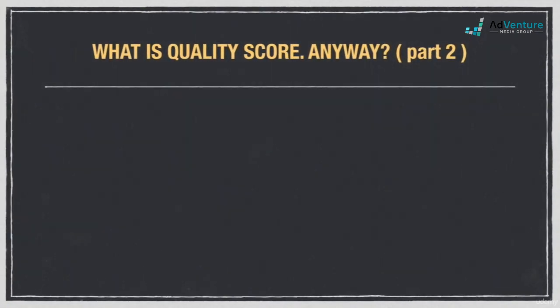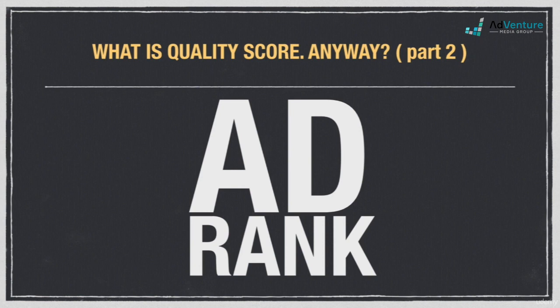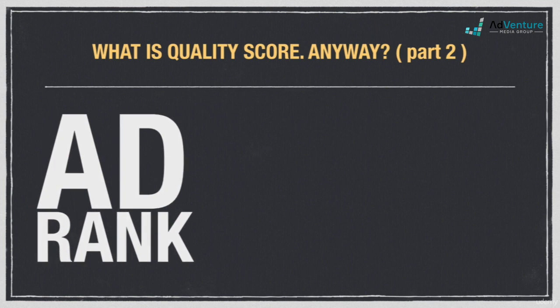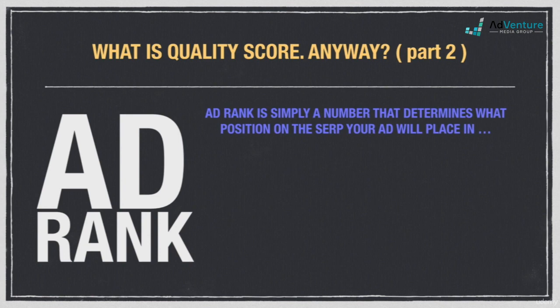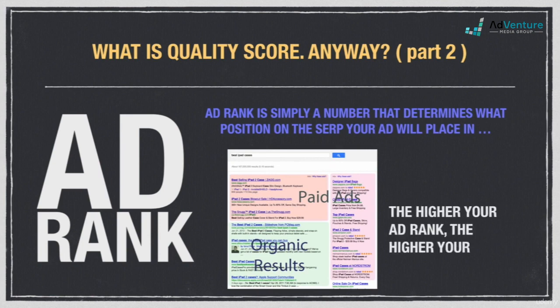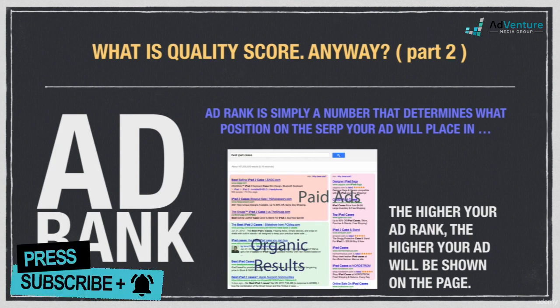One of the first numbers you need to be familiar with is something called AdRank. Your AdRank is just a number that determines what ad slot your ad will show in. The advertiser with the highest ad rank gets their ad in the very top ad slot on the search engine results page, or SERP. Your ad rank is calculated in a live auction every single time a search is performed on Google. Let's take a closer look at how ad rank was calculated in the pre-quality score era.